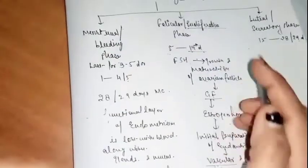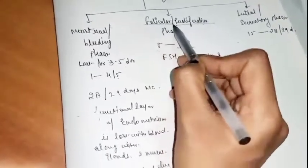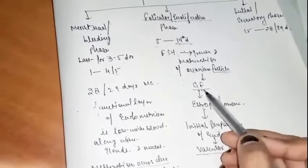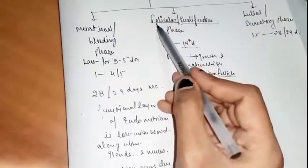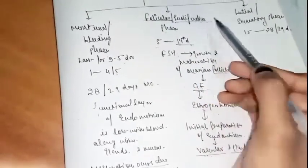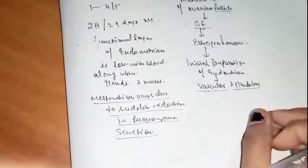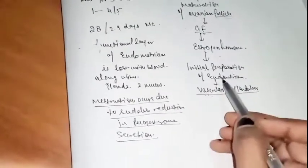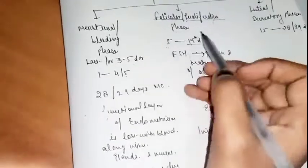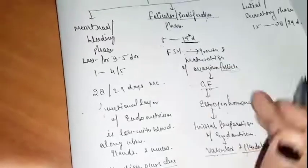That's why this phase is called the follicular and proliferative phase. Also, glycogen and fat accumulate in the endometrial cells at the end of this phase. At the midpoint of the menstrual cycle — the 14th day — ovulation occurs.